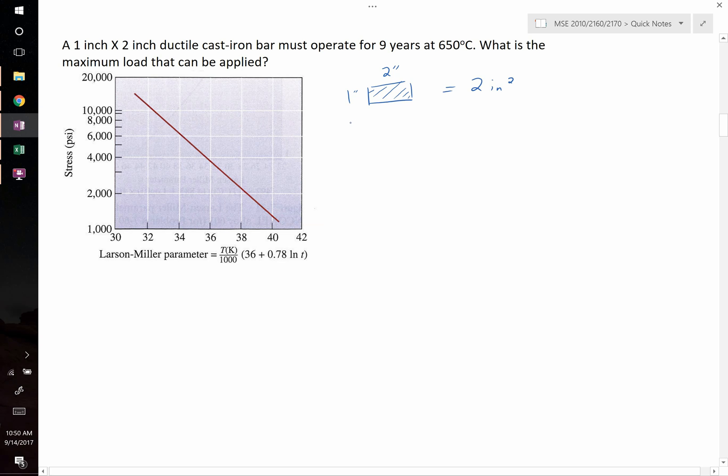Next, we're told this is happening at 650 degrees Celsius. To turn that into Kelvin we take 650 plus 273, and that equals 923 Kelvin.